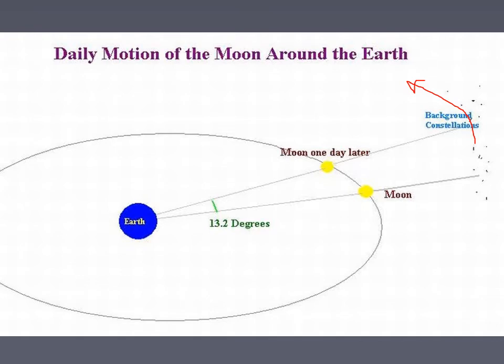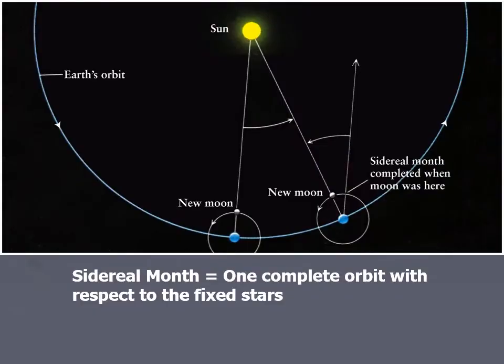That means it takes roughly two days, almost two days, to go from one constellation to the other. But the other thing that's happening is that Earth is going around the sun. As the moon makes one complete orbit around the Earth, it's not lined up with the sun again.